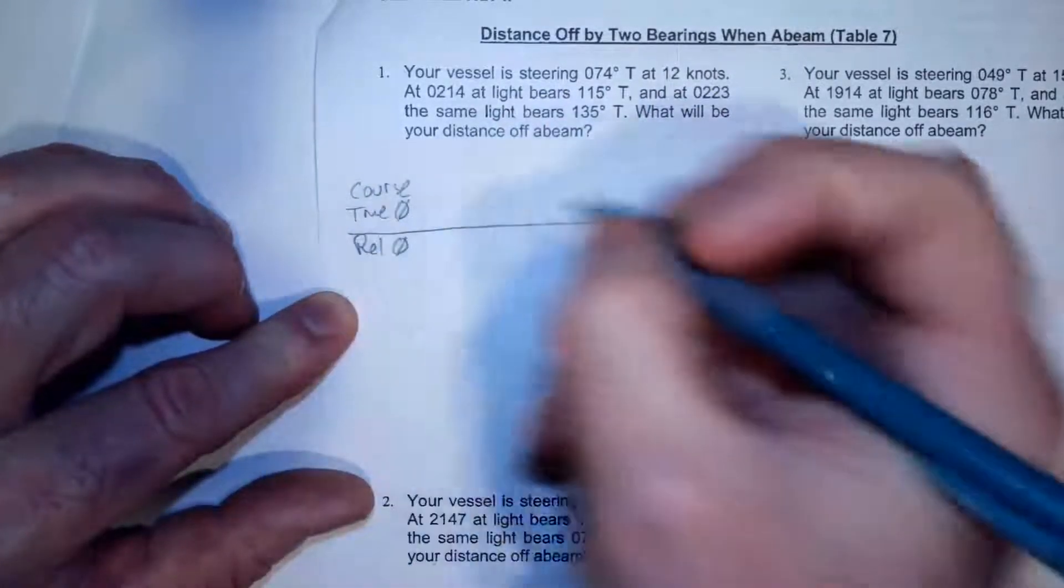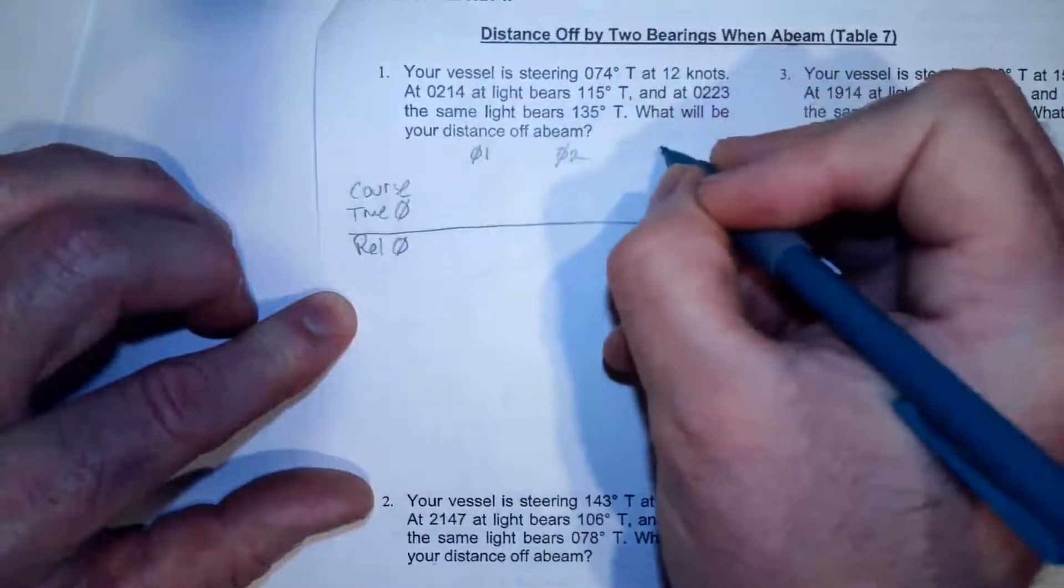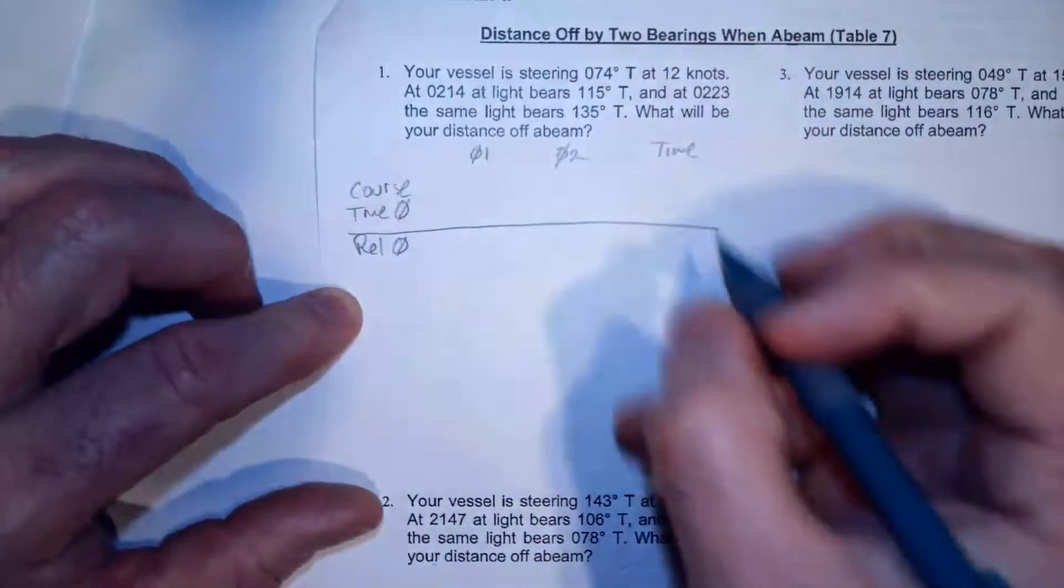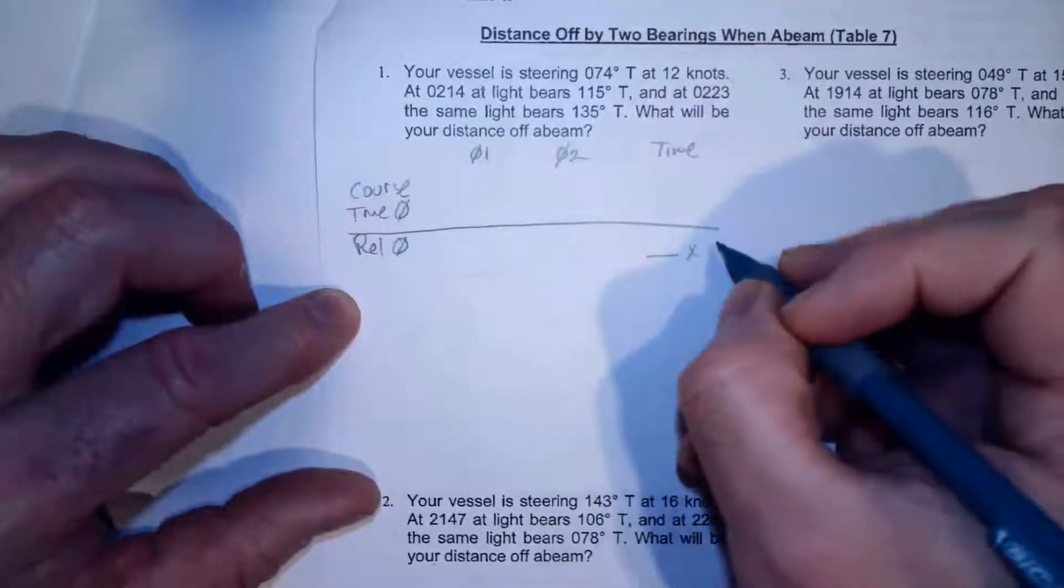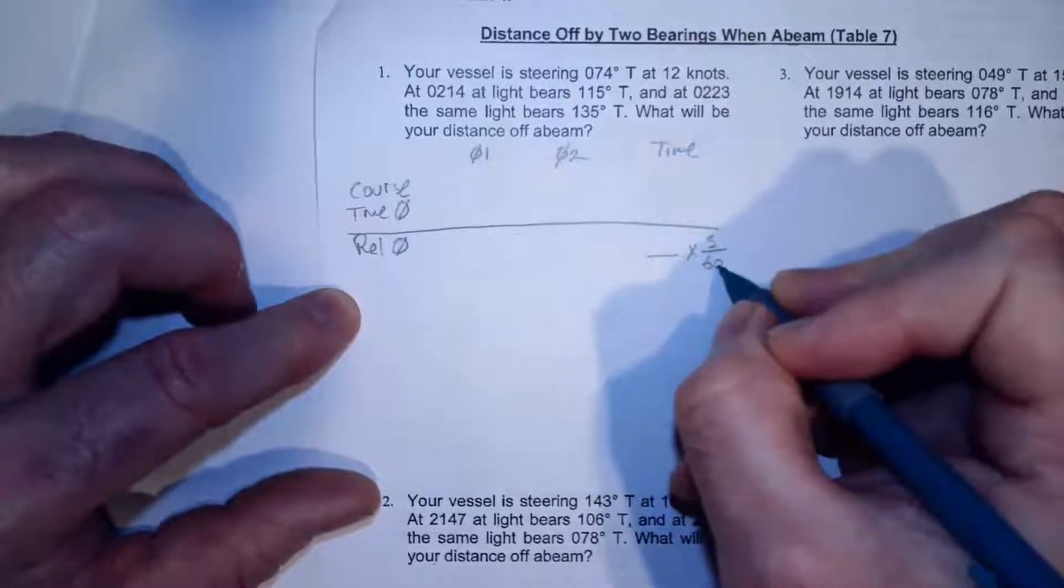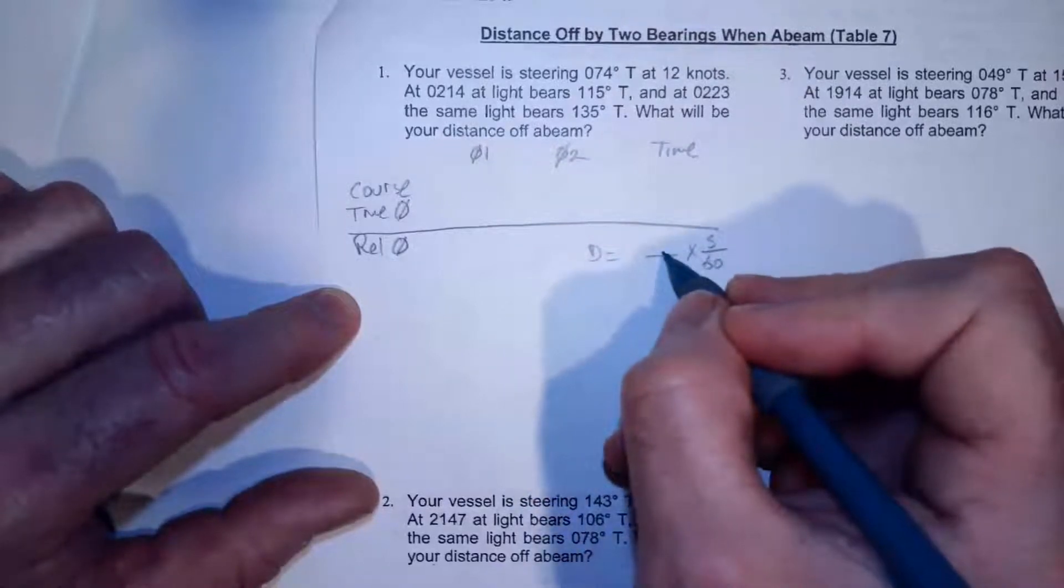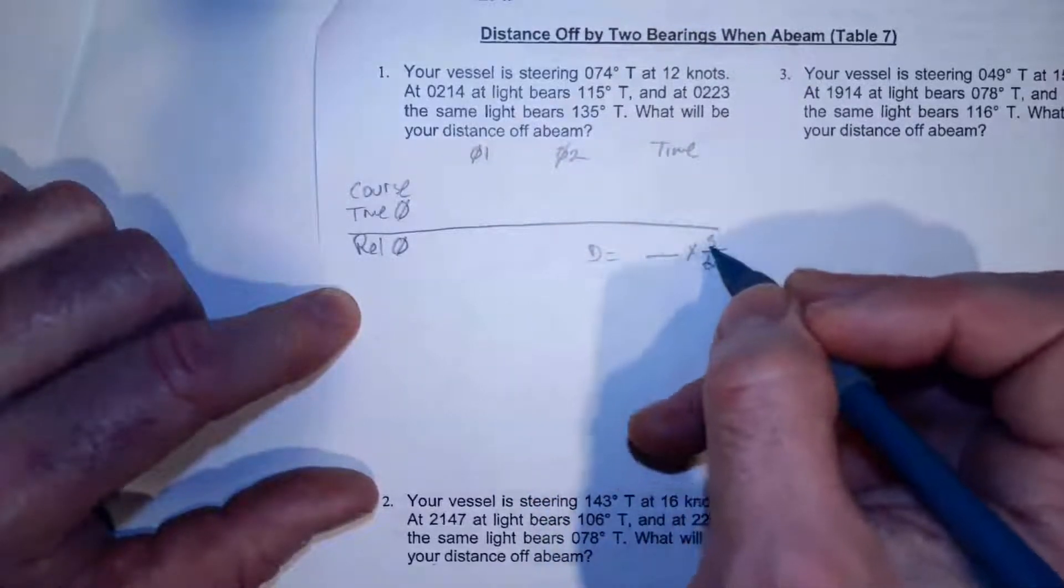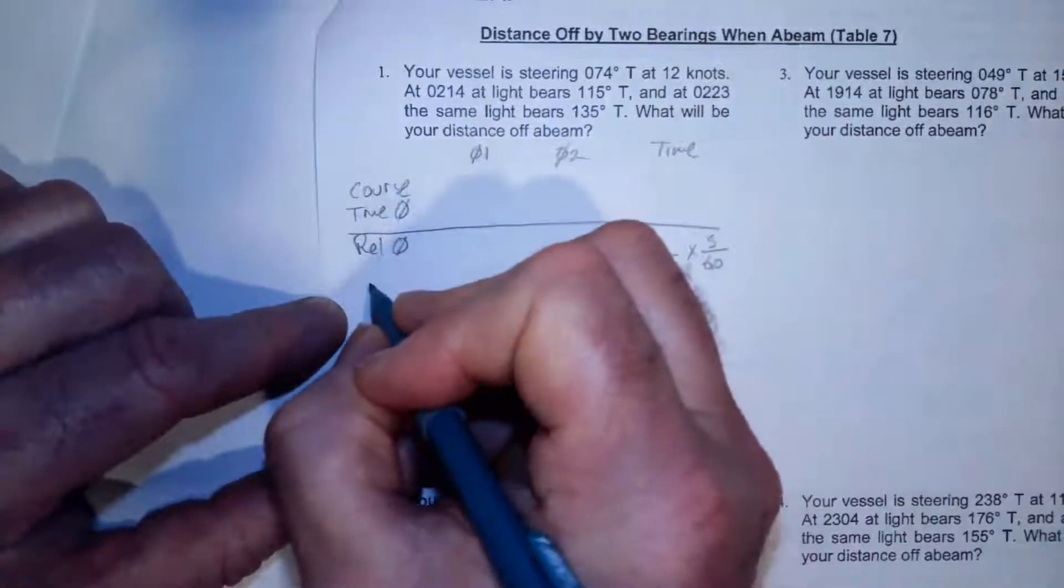I'm going to have bearing one, column for bearing two, I'm going to have a column for time. I'm going to calculate what my time is, and then I'm going to multiply that times my speed over 60, and that's just a conversion factor. So my distance is going to equal my time run times my speed over 60, and then I got to decide what column I'm going to be in.